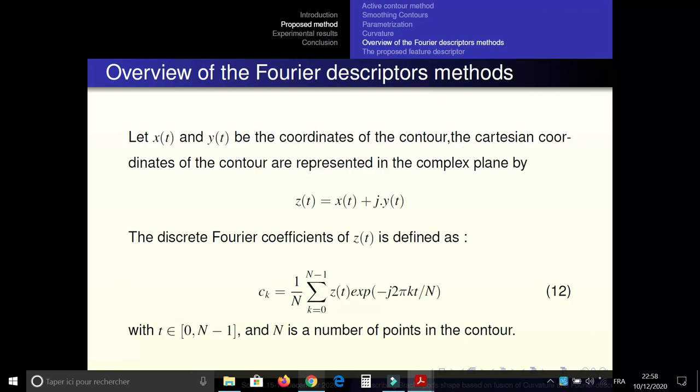An overview of Fourier descriptor method. Once the contour is detected using level set method, the Cartesian coordinates of the contour are represented in the complex plane and we apply the fast Fourier transform to this signature. We obtain the Fourier coefficients.